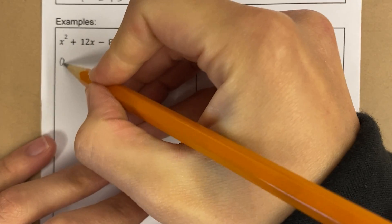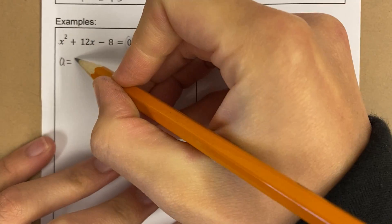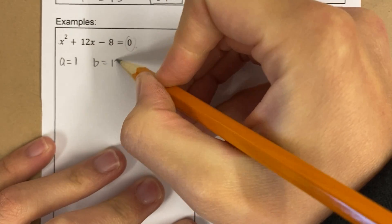Alright, this starts off just the same as any quadratic formula problem. I notice there's already a zero here, this number's already positive, so I am ready to go. This is in standard form.